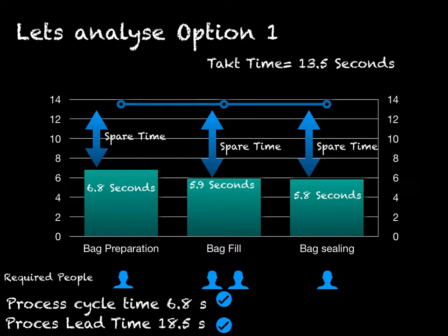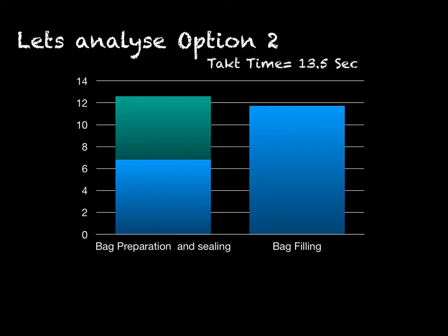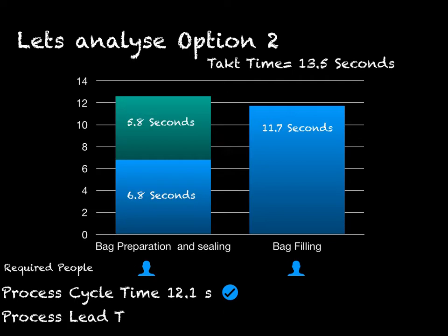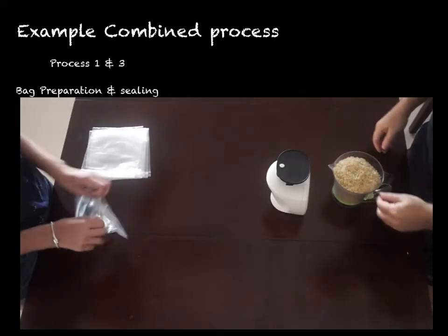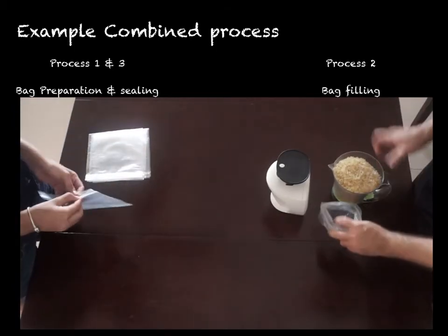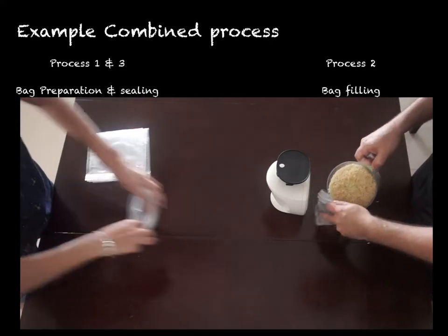Let's analyze option 2. If we combine process 1 and 3, the addition of both cycle times is less than 12.6 seconds — which is less than the takt time, so it is a possible solution. It requires a layout change. By doing so, we remove one person from the overall manufacturing process, and this will still comply with takt time and lead time. Let's see how we can implement this solution. Notice the layout change — process 1 and 3 are now combined. Let's measure the time required to produce one bag from beginning to end.